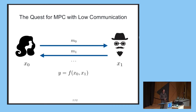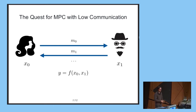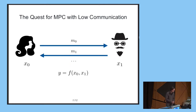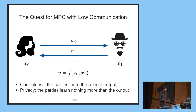So what is secure computation? You have some number of parties — here I will focus on the case of two parties for simplicity, but everything I say can be extended to more parties — and they would like to jointly compute some public function f on their joint private inputs. The protocol should be correct, meaning that all parties should get to learn the output of the function, and it should be secure, in the sense that no party should learn anything more from the protocol than the output of the function.